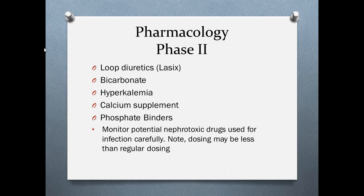Pharmacology for phase two: we give loop diuretics, specifically Lasix, to draw fluid off. Remember that loop diuretics work based on the patient's kidney function — if BUN and creatinine are elevated, the patient will require a higher milligram dose of Lasix to be effective. Bicarbonate can be given PO or IV. Do not push IV bicarbonate — IV bicarbonate is only given IV push during a code. Bicarbonate is given because the kidneys are not making bicarbonate, to reverse metabolic acidosis.